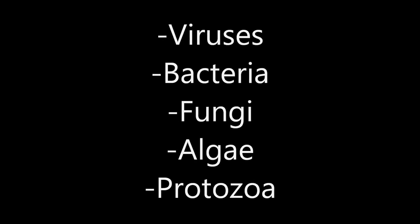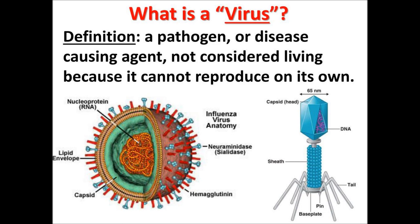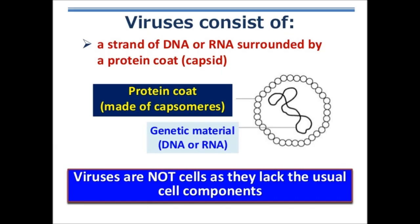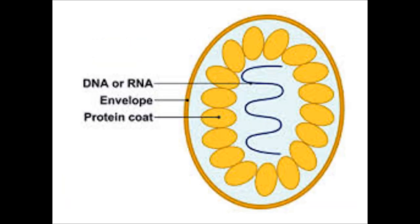Let's first discuss about viruses. Viruses are the smallest of all microbes and are noncellular, as they do not have cells. They are strictly parasites. They are infectious particles made up of DNA or RNA as the genetic material, surrounded by a protein coat called capsid. Capsid consists of smaller units called capsomeres. So viruses are simply considered as nucleoproteins.